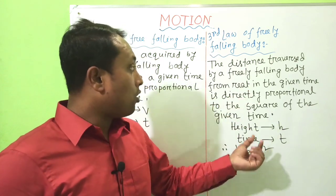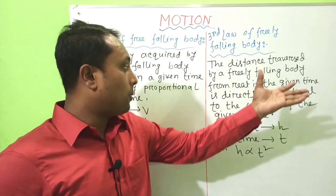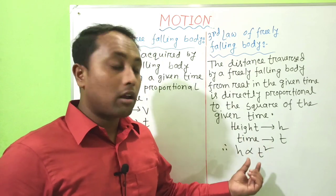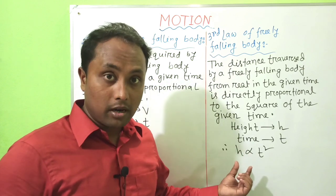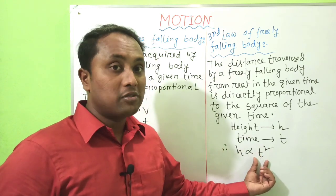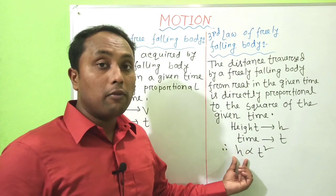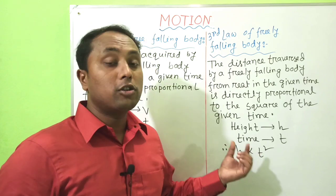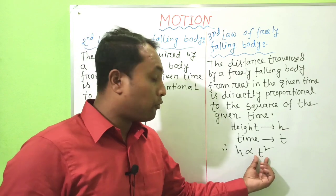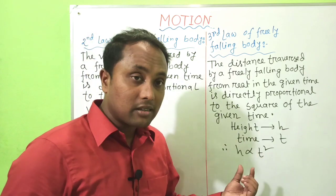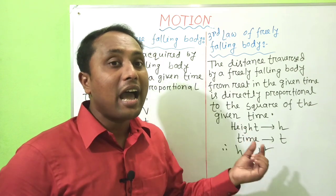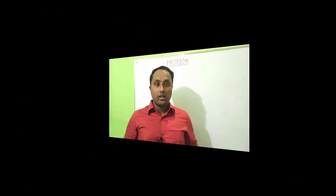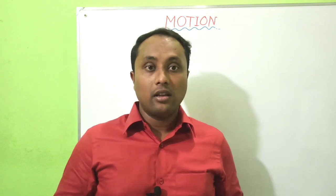For example, if the falling time is 1 second, the height is 1 meter. If the falling time is 2 seconds, the height is 4 meters. If the falling time is 3 seconds, the height is 9 meters. This is because h is proportional to t², according to the Third Law of Freely Falling Body.